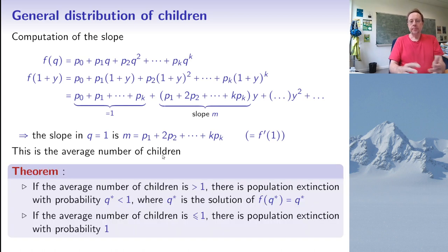So what we have shown with this relatively simple argument is the following theorem. So if the average number of children is strictly larger than 1, then the population goes extinct with a certain probability q star that is strictly smaller than 1. And it is the solution of f of q star equals q star, which is strictly between 0 and 1. And on the other hand, if the average number of children is less or equal 1, then the population will go extinct with probability 1.